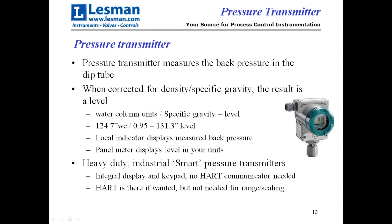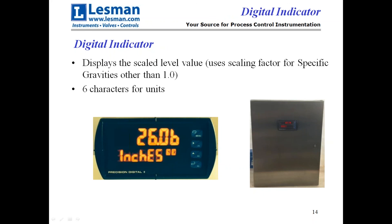We use a pressure transmitter to read the back pressure in the tube to give us the level reading. These are industrial-rated smart pressure transmitters — they have HART. You don't have to have HART to set them up; we configure both the transmitter and display to read level directly per your specification. Most people will take the signal back to a control system to get an electronic reading and do their control off it.